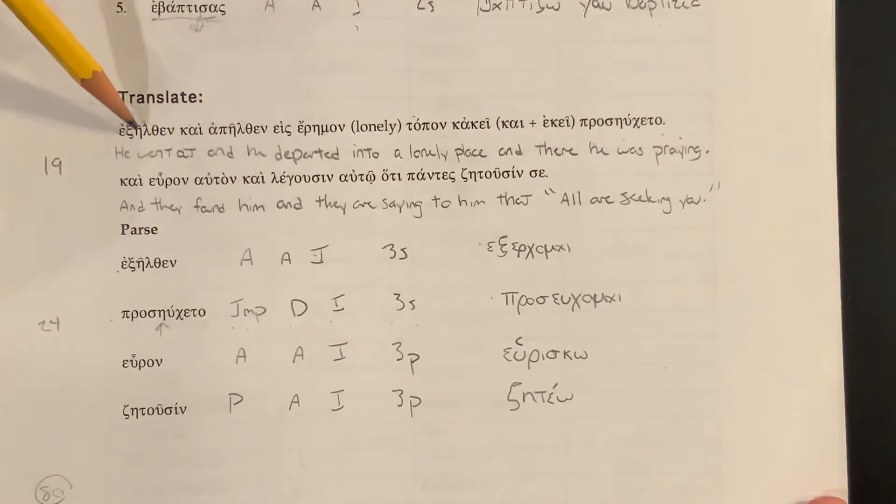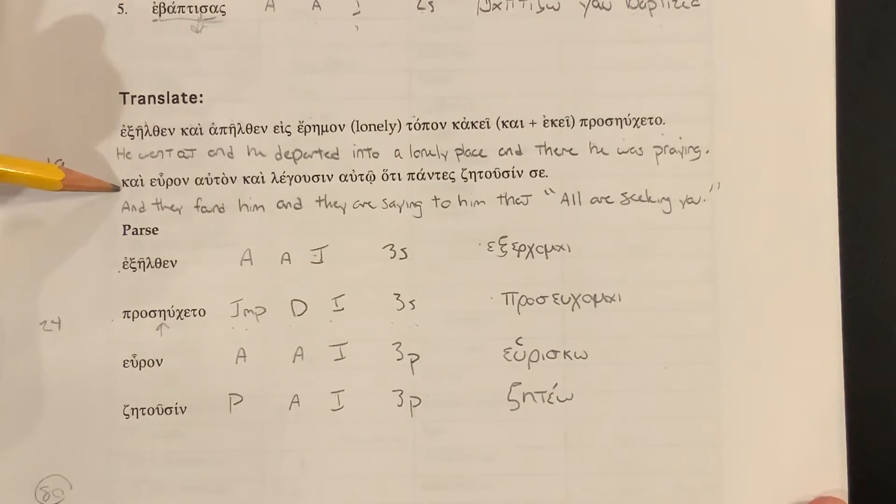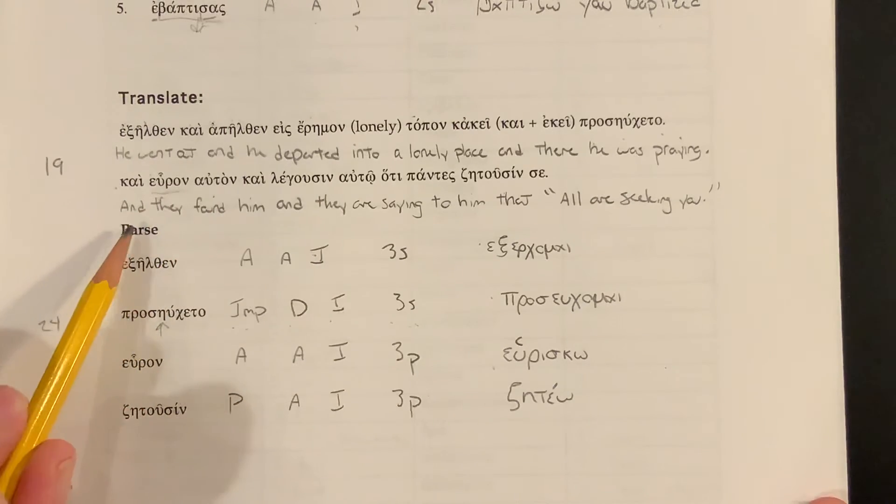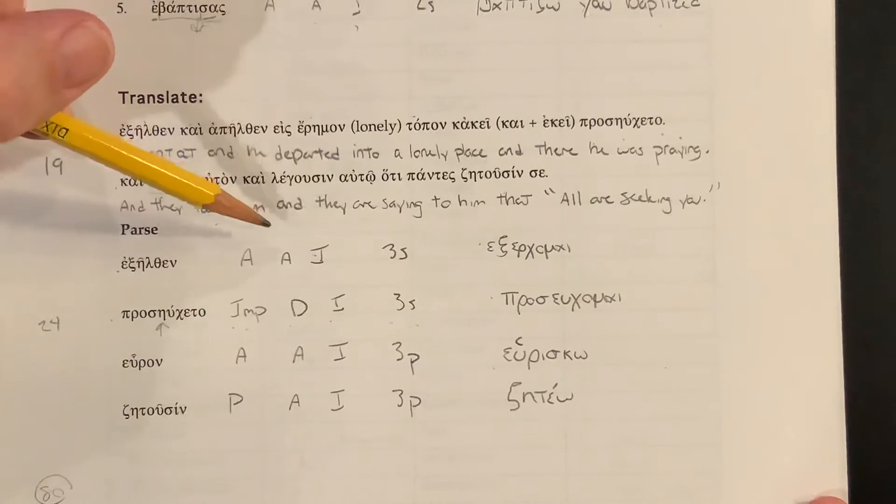So interesting here, we say, he went out and departed to a lonely place, and in that place, he was praying. So Aorists, Aorists, simple action, but then continuous. He went out and he was praying there. Kai and huron. This is the verb heurisko. Heurisko. It has a stem change. It's a second Aorist. And so this is an Aorist, active, indicative, third plural. They found him. They found him.